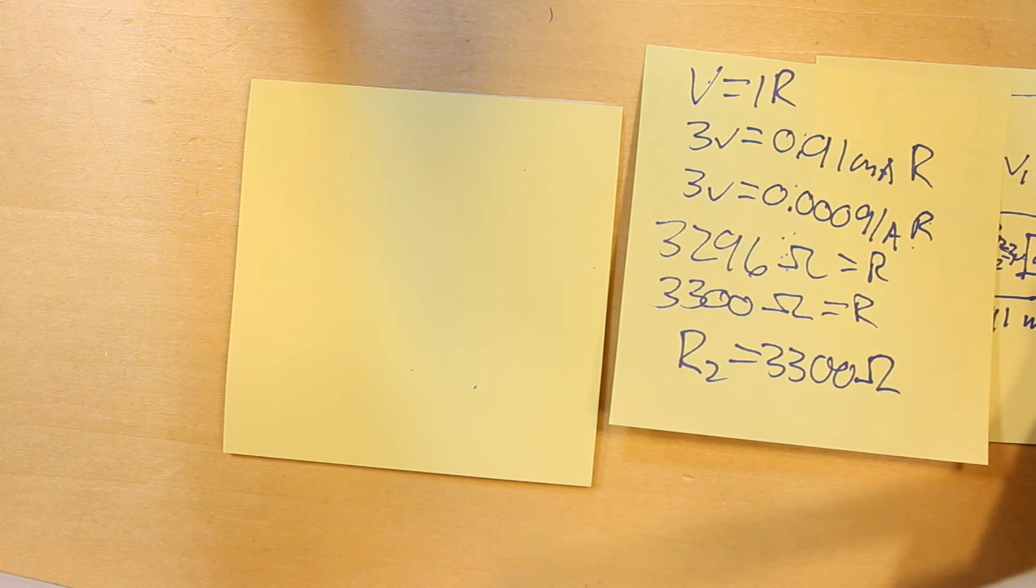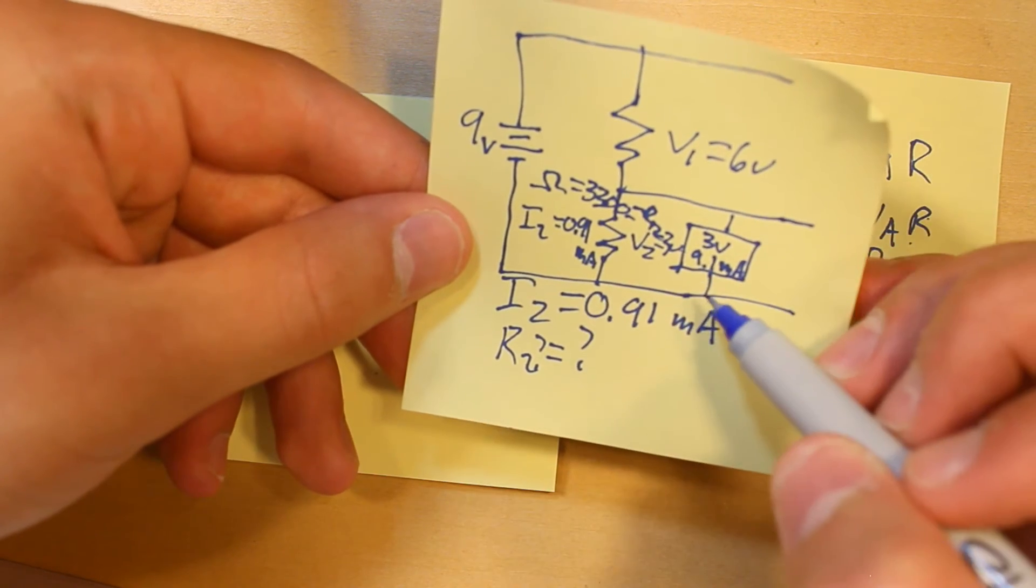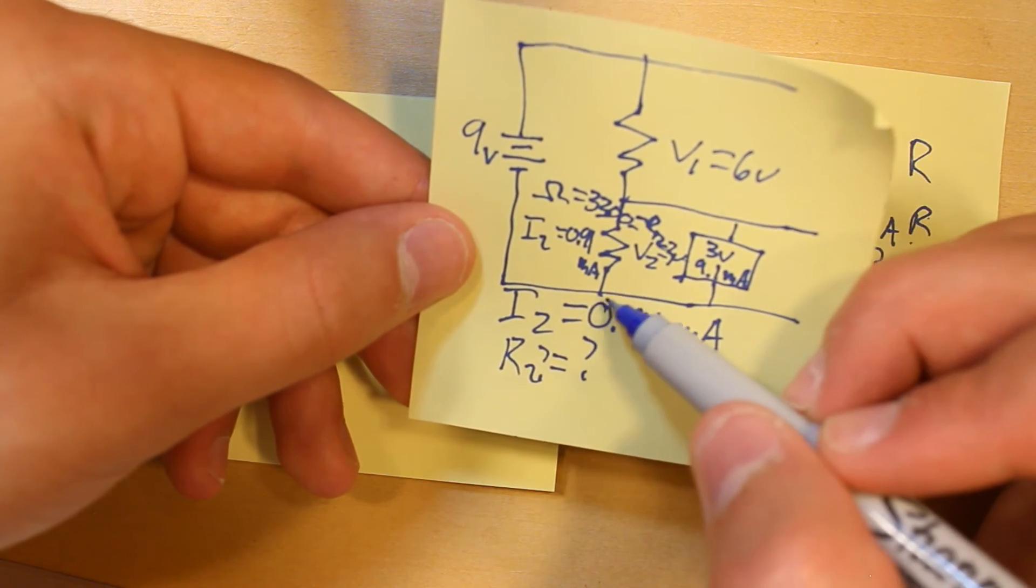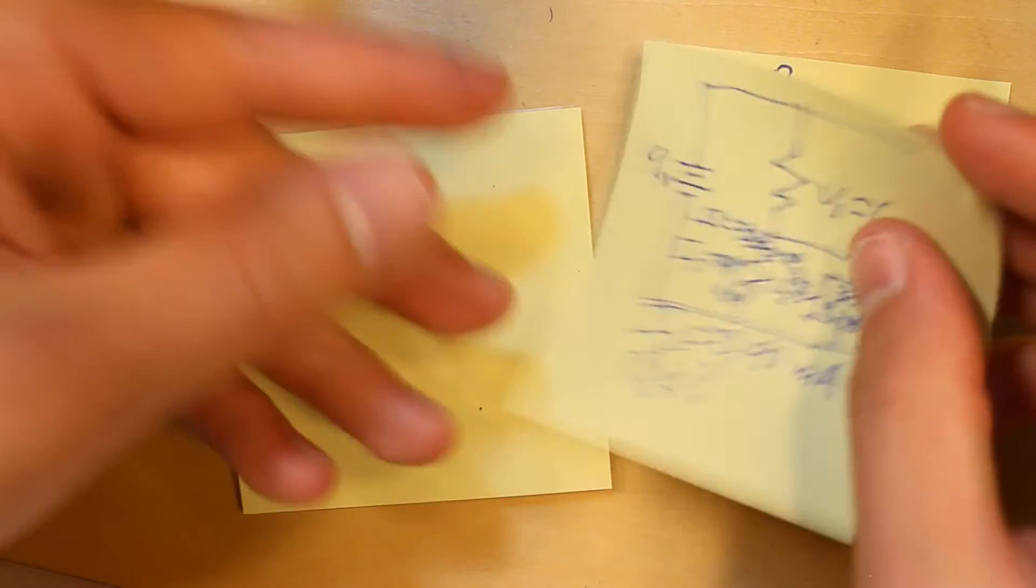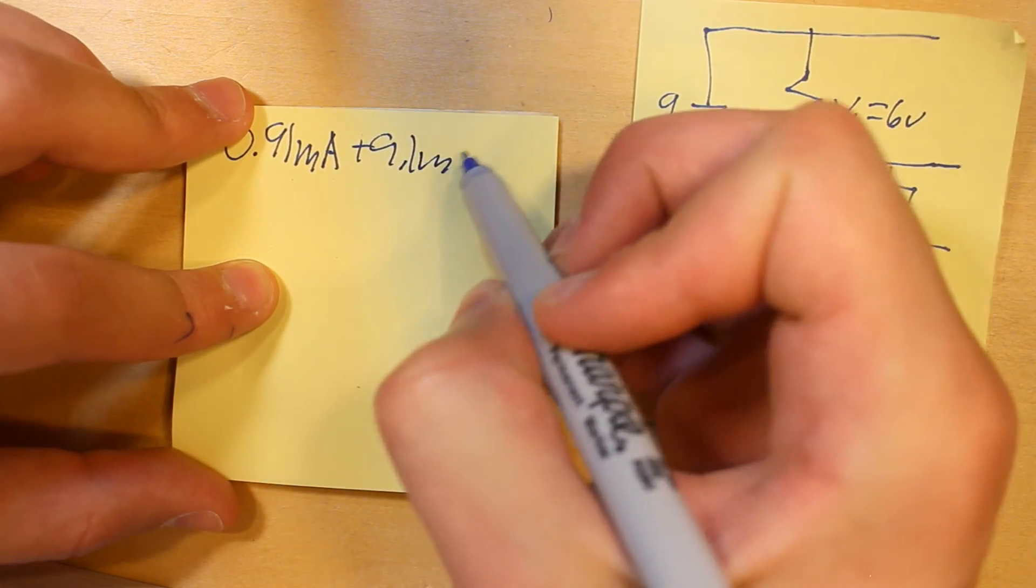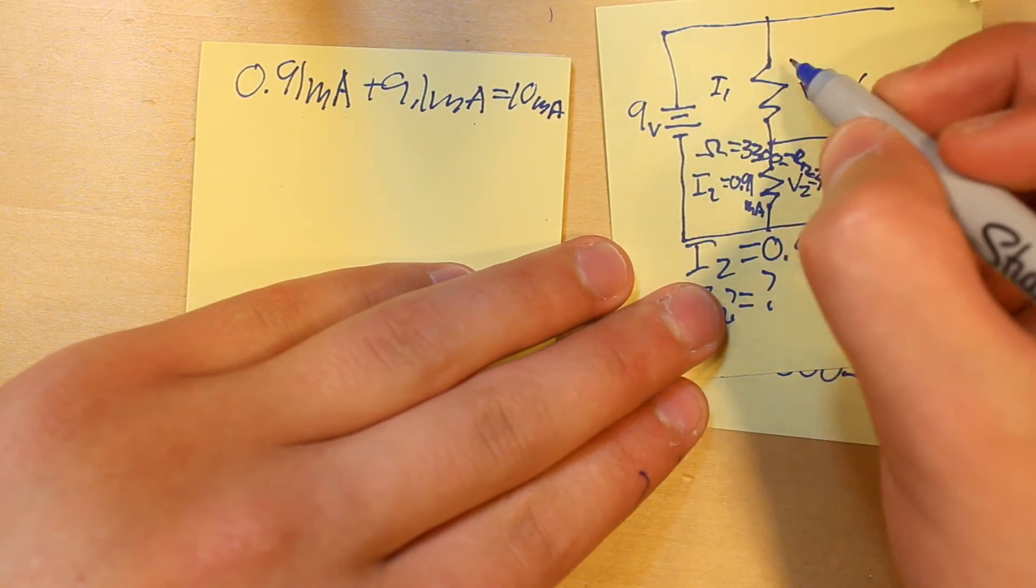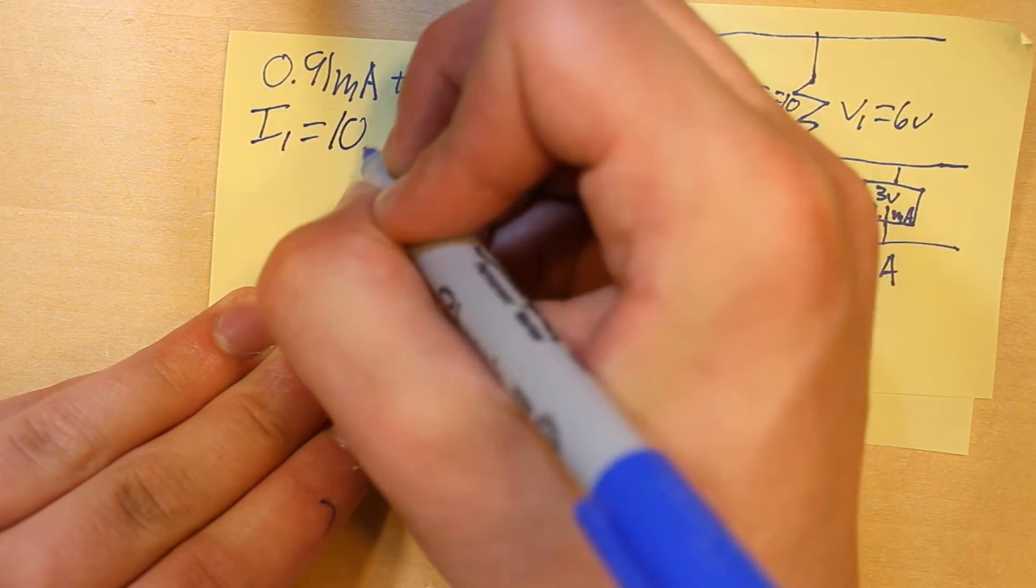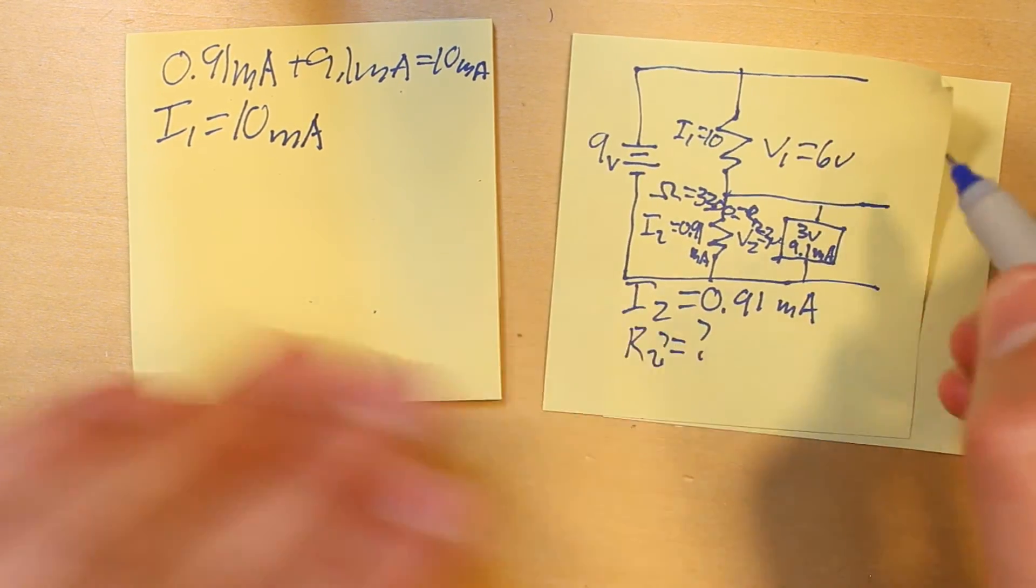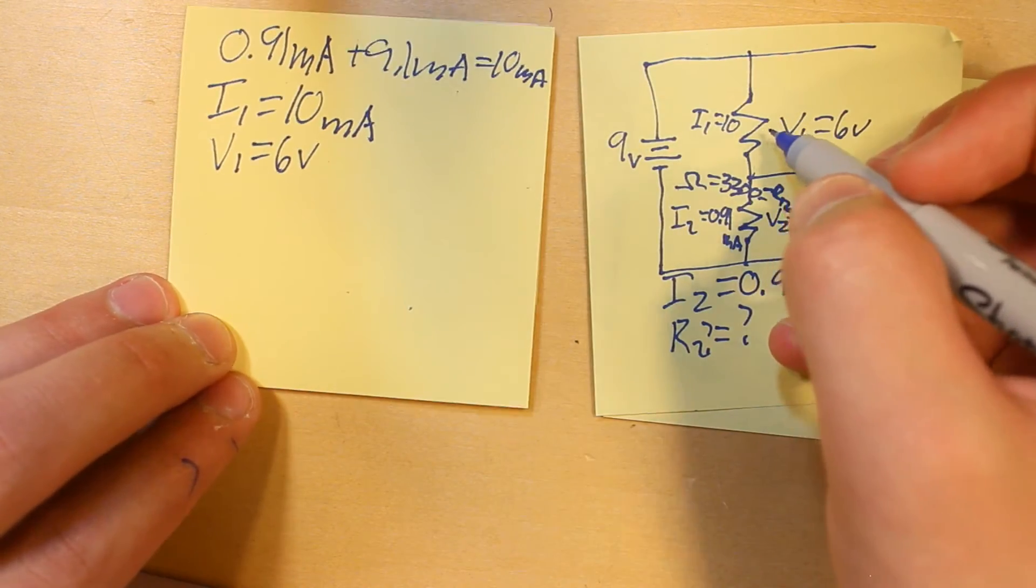Okay, now you're wondering, well, what's R1? Well, R1 needs to be able to supply 0.91 milliamps and 9.1 milliamps because it's going to be giving this resistor the current that it's pushing to ground and it's going to be supplying the current that goes to the load. So, 0.91 milliamps plus 9.1 milliamps equals 10 milliamps. So, that's going to be I1. I1 equals 10 milliamps.